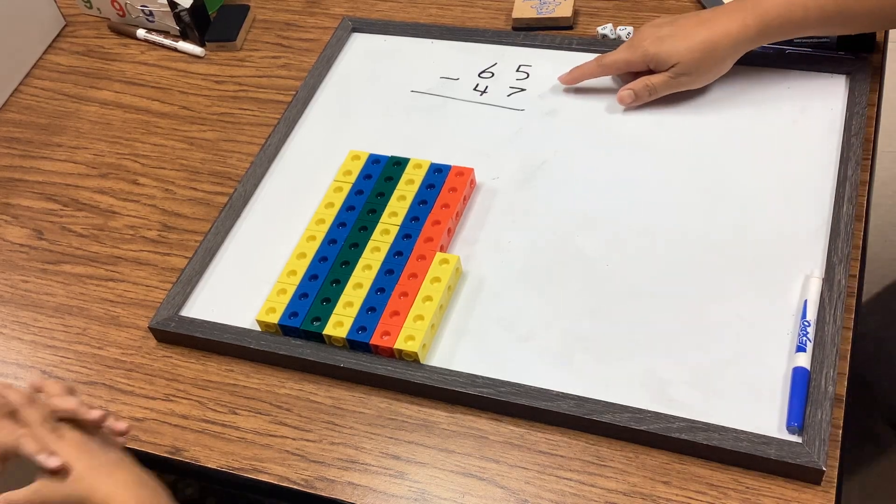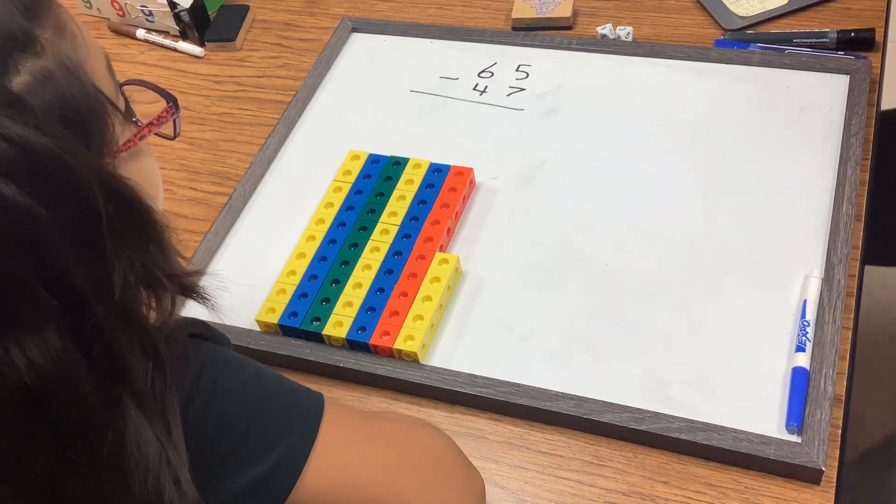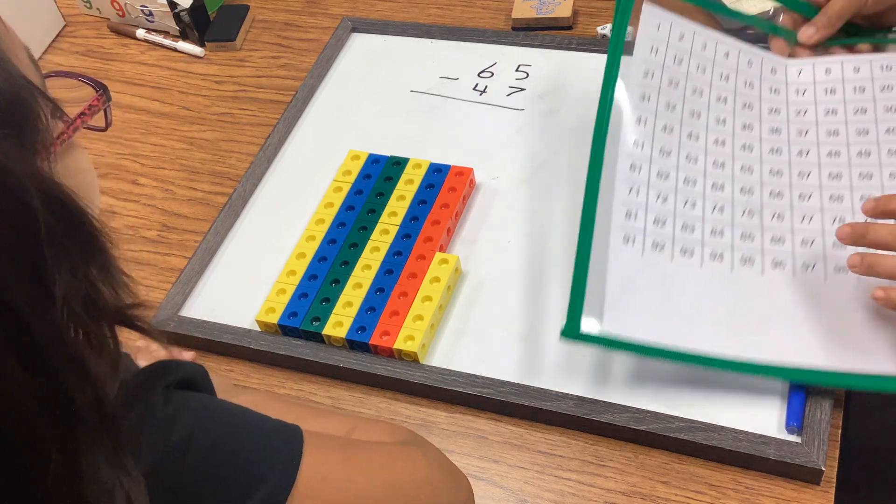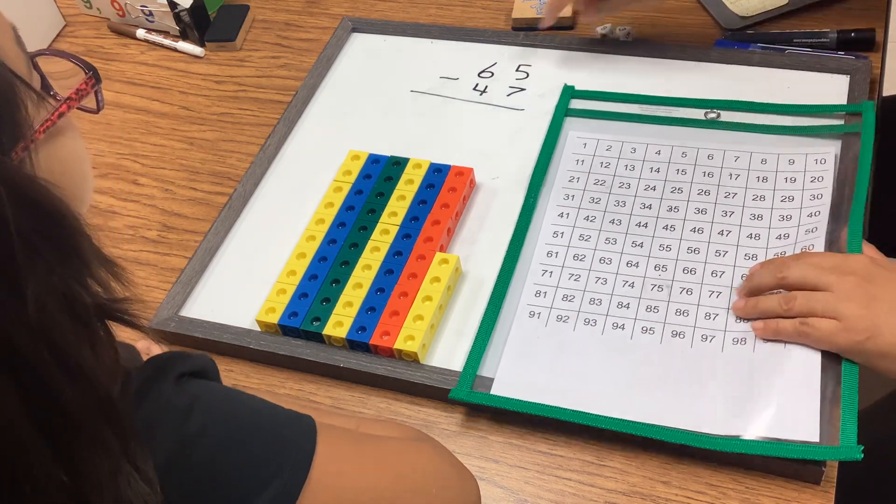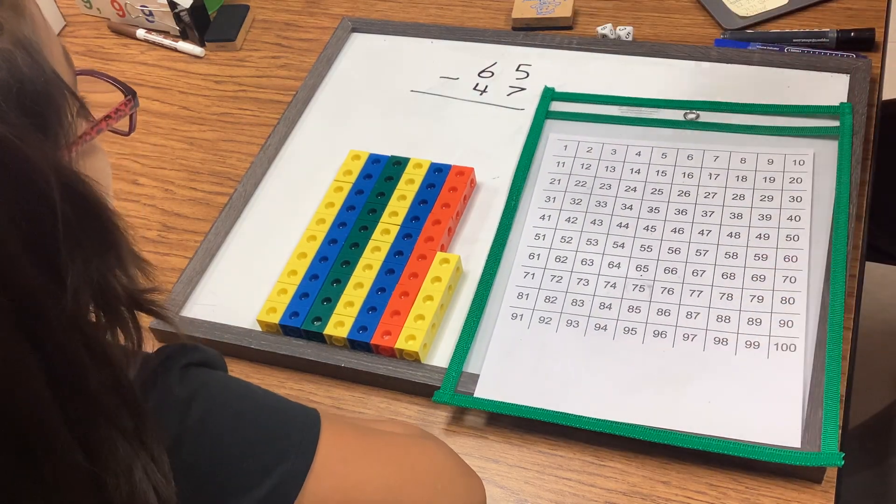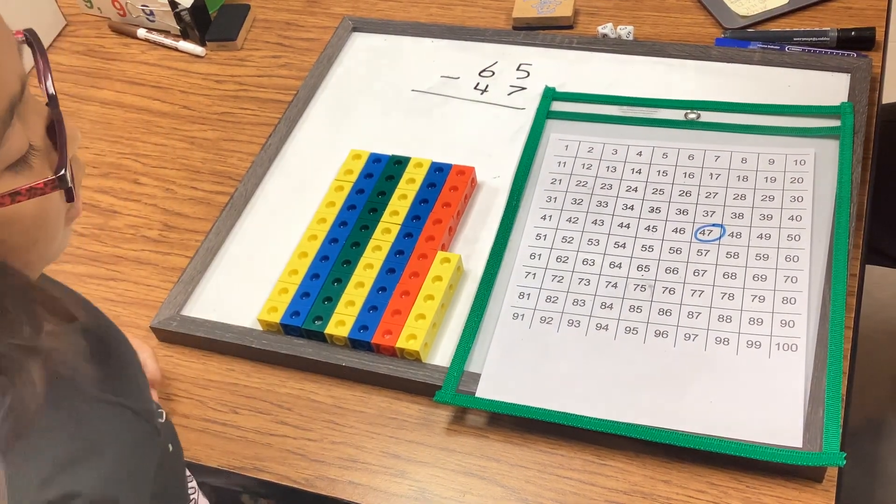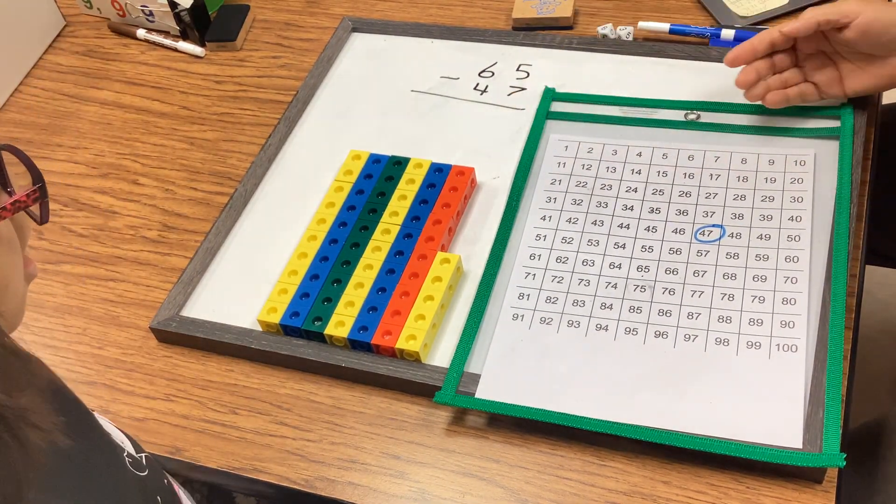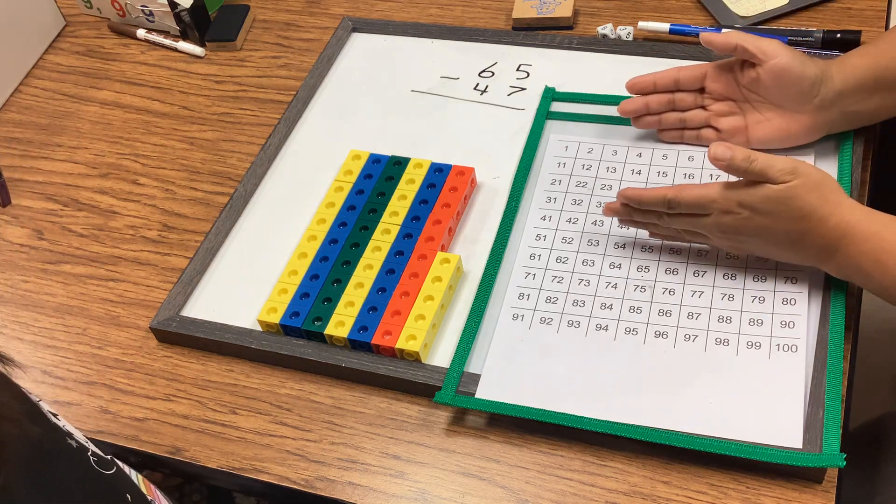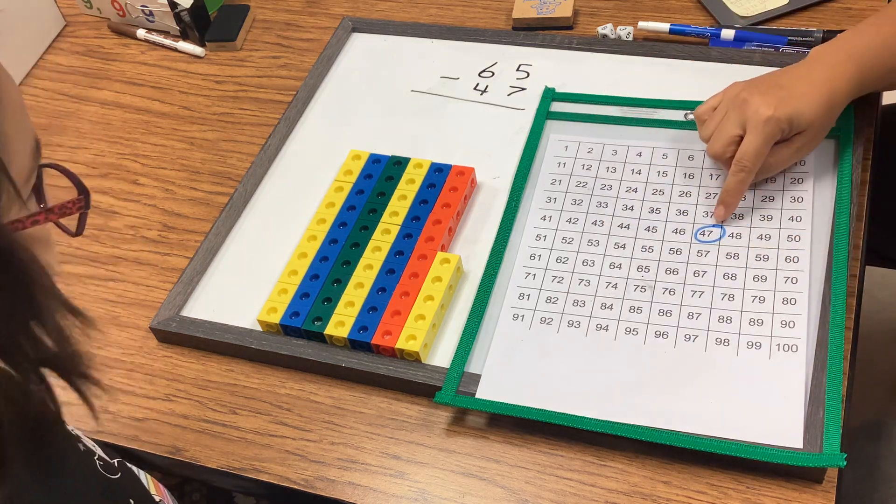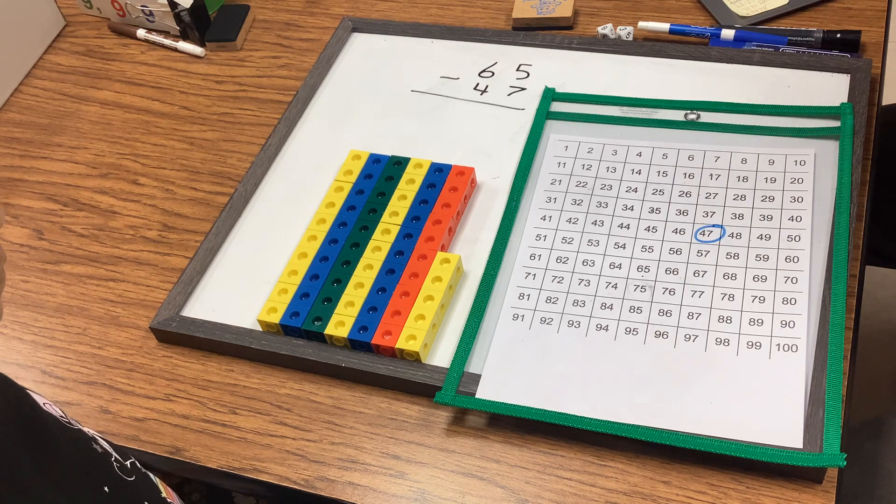So now we have 67 minus 47—I mean, 65 minus 47. So 47 is right here. Okay, so if you want to take away 47, how many tens can you take to get your 47? How many tens can you take?